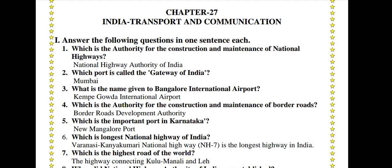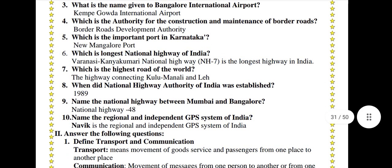Which is the authority for the construction and maintenance of border roads? Border Roads Development Authority. Which is the important port in Karnataka? New Mangalore Port. Which is the longest National Highway of India? Varanasi to Kanyakumari — NH7 is the longest National Highway in India.